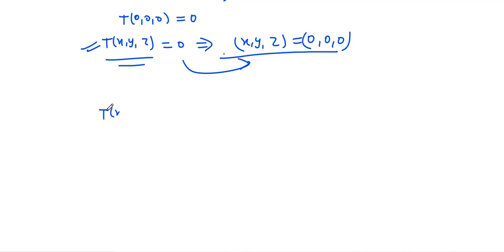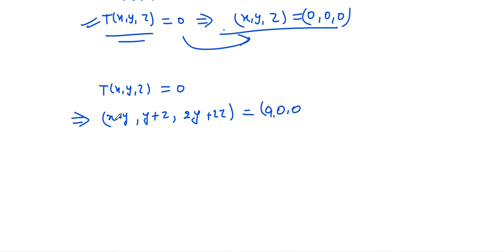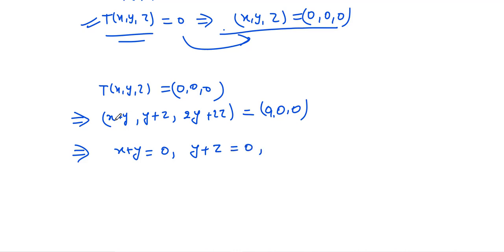Assume T(x, y, z) = 0. This means (x+y, y+z, 2y+2z) = (0, 0, 0). This gives us the system: x + y = 0, y + z = 0, and 2y + 2z = 0.